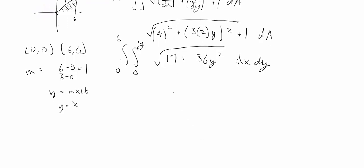We see that we don't have any x's. We can put x square root 17 plus 36y squared, and that goes from 0 to y. dy is from 0 to 6. When we plug in, we get y times the square root of 17 plus 36y squared. And then if you plug in 0, that would just be 0. So then we have that from 0 to 6 dy.